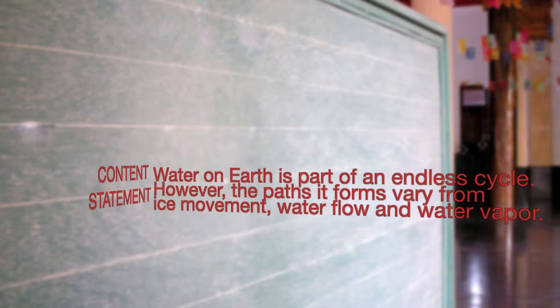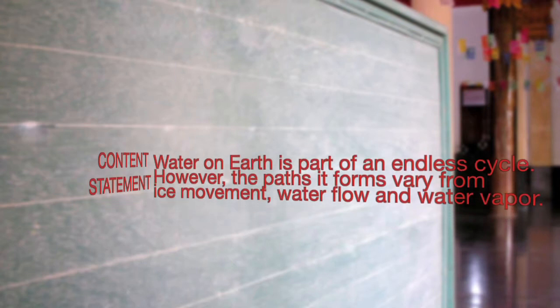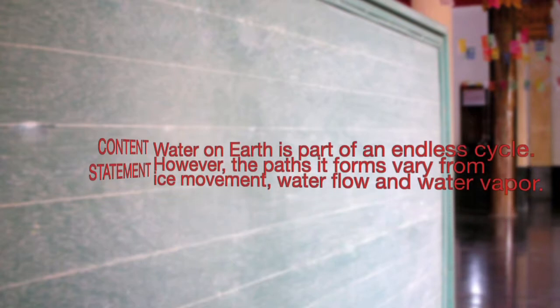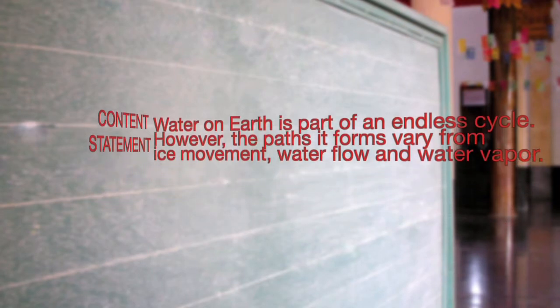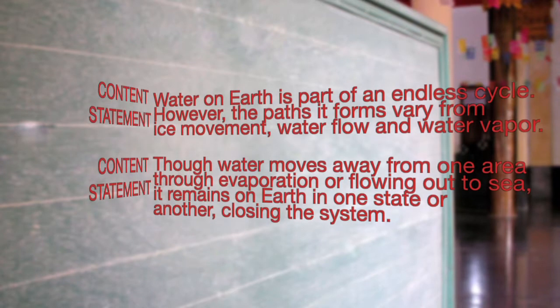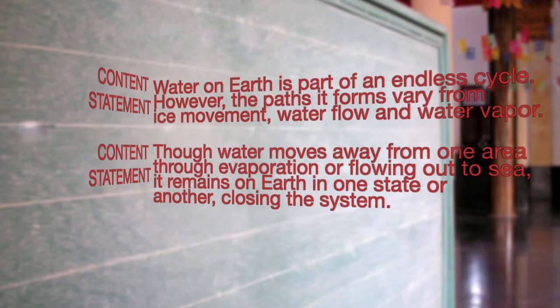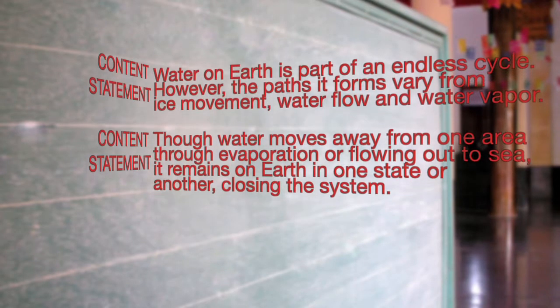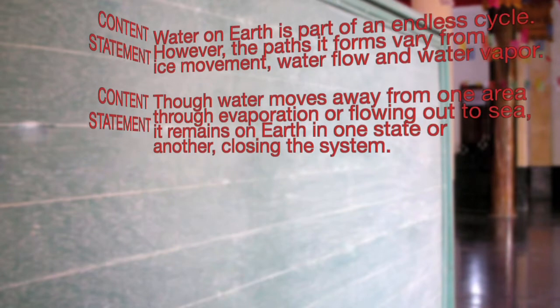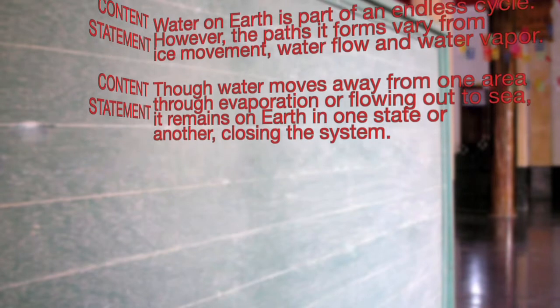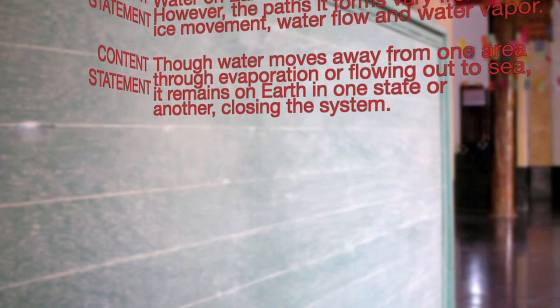Water on earth is part of an endless cycle; however, the paths it follows vary — from ice movement, water flow, and water vapor. The water moves away from one area through evaporation or flowing out to sea, and it remains on earth in one state or another, closing the system.